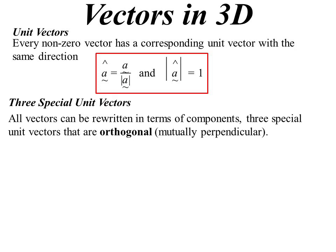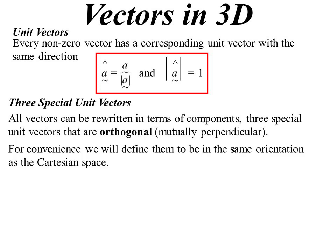We had two special unit vectors you'll remember in two dimensions, the I and the J. Well now we're going to have three and they are what's called orthogonal. Basically it means each of those vectors are 90 degrees to the other. They're orthogonal, mutually perpendicular. We'll define them to be in the same orientation as the Cartesian space. Because if you think of those three axes, they are 90 degrees to each other. So it makes life easier.